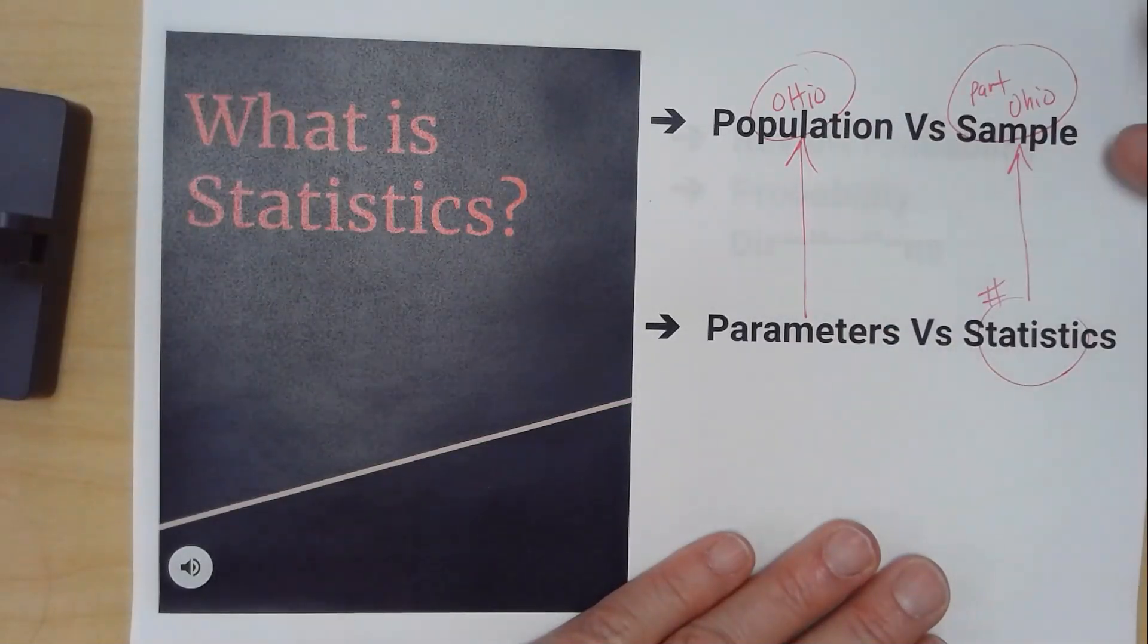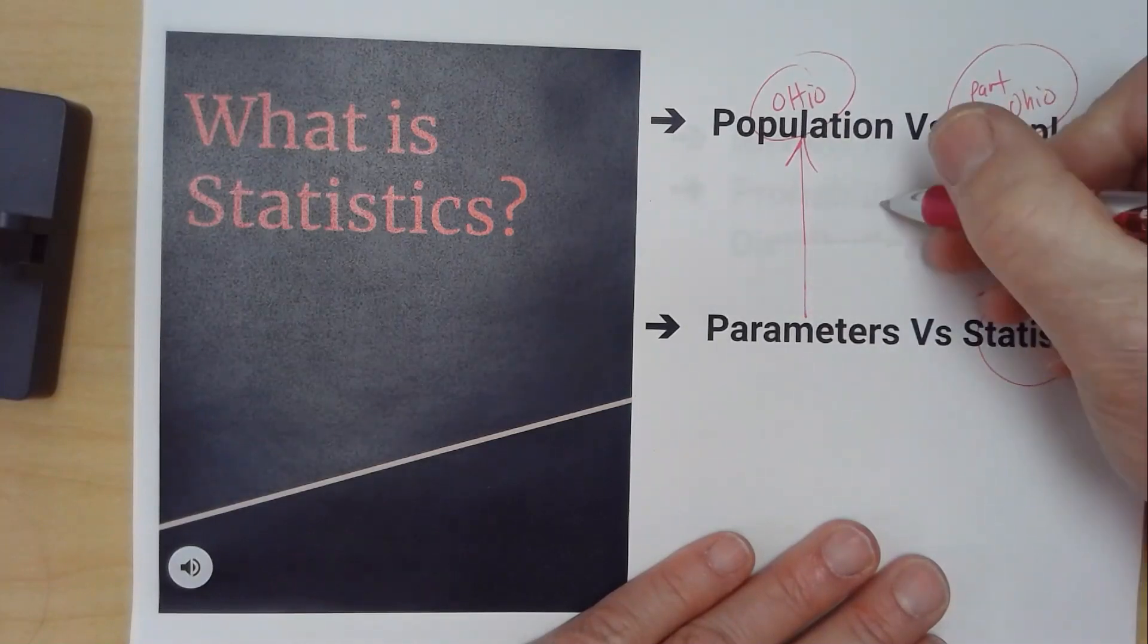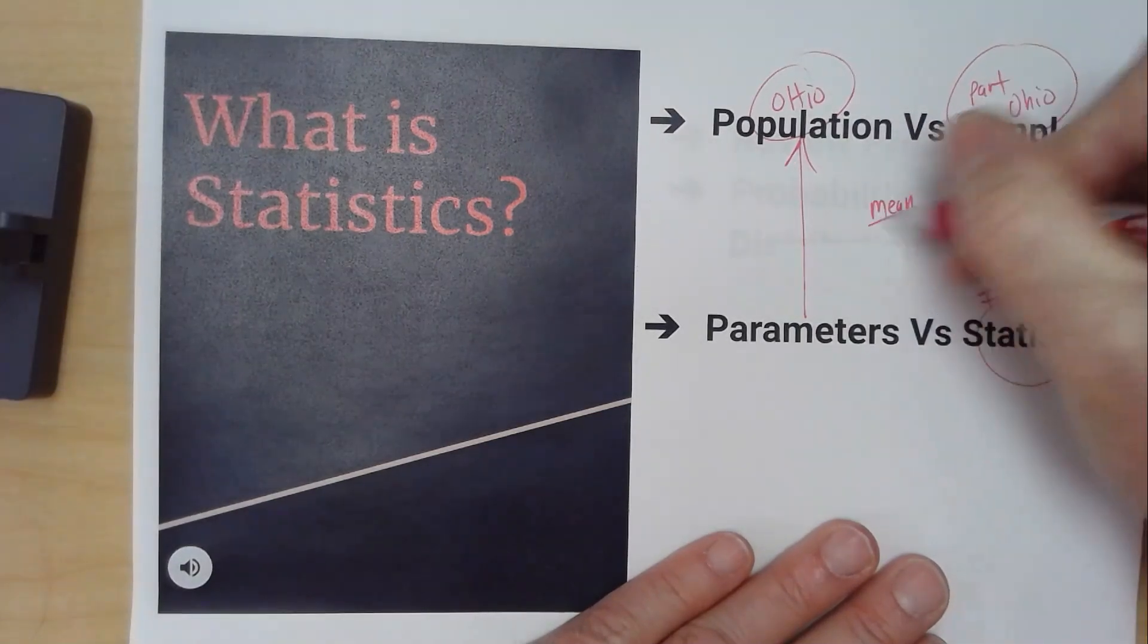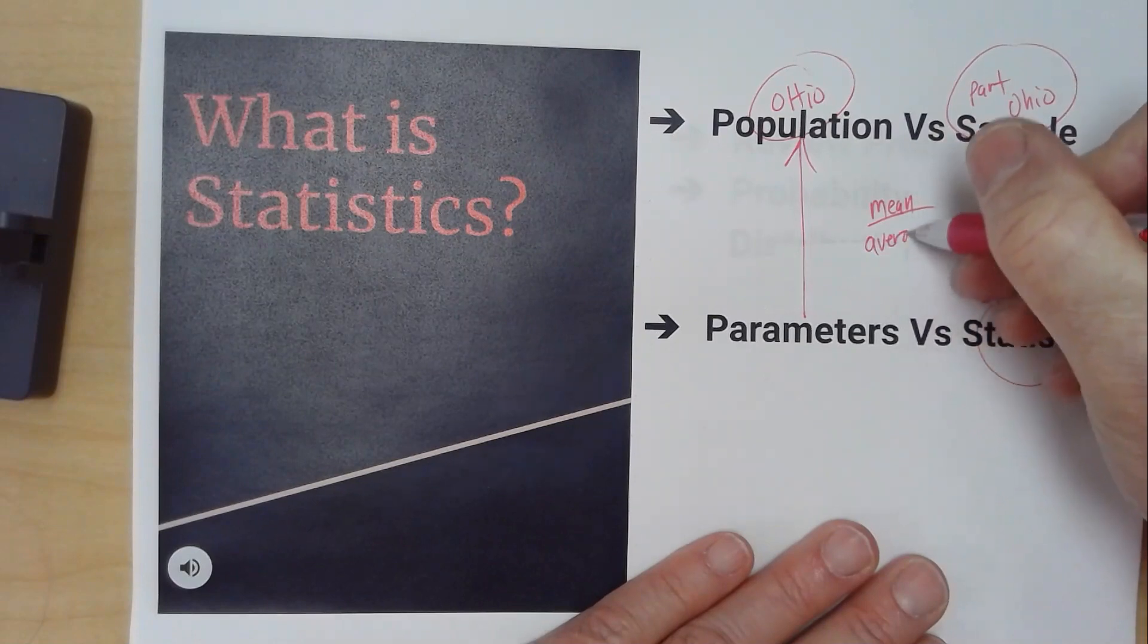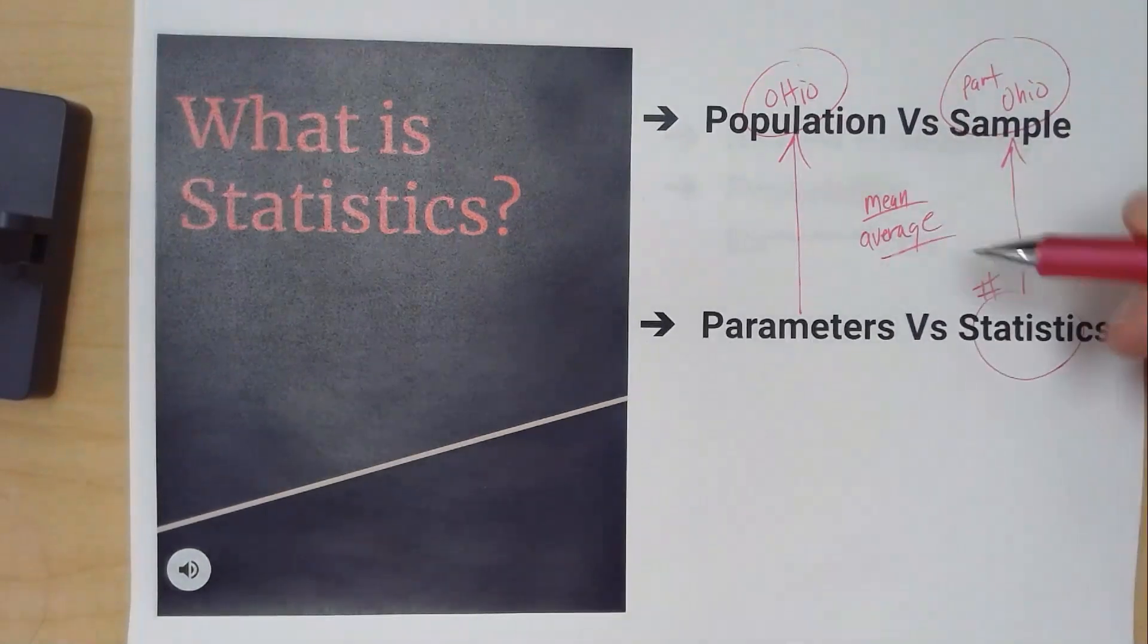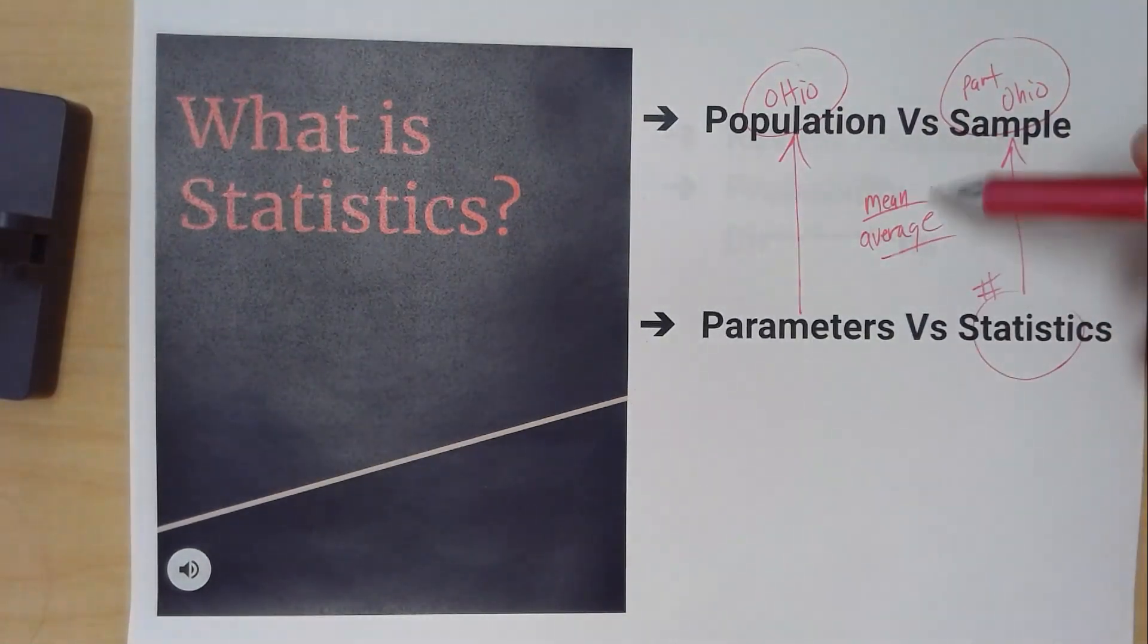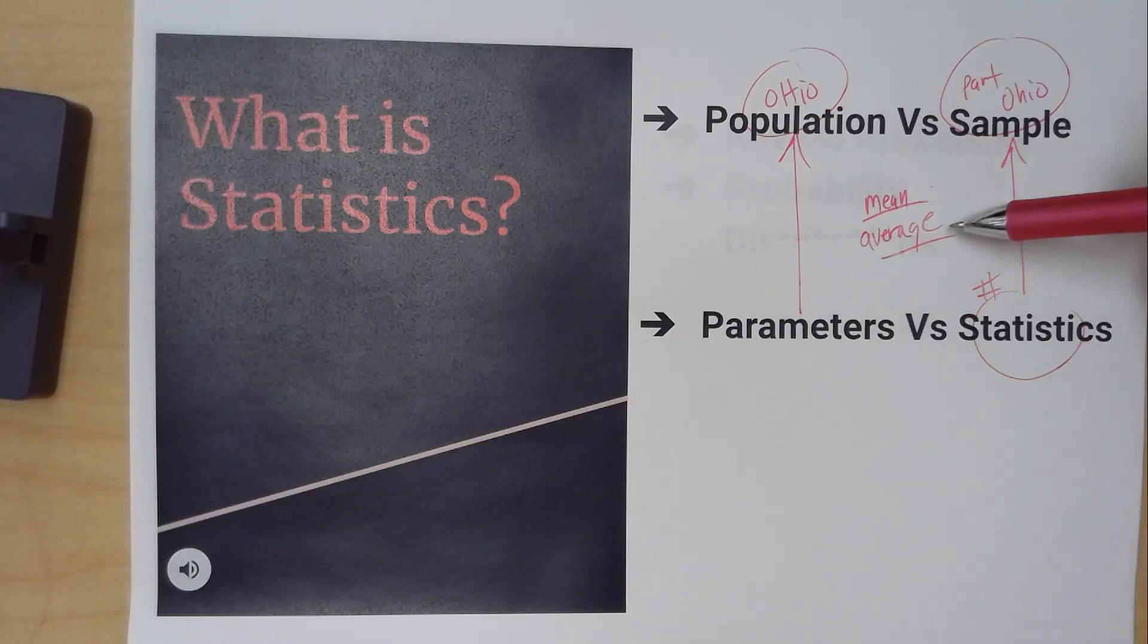One of the numbers that we talk about is the mean. What is mean? Mean is the average. You could talk about the average height in Ohio, the average shoe size, the average amount of money that people make. What's the part of the people that are going to vote for somebody in Ohio?